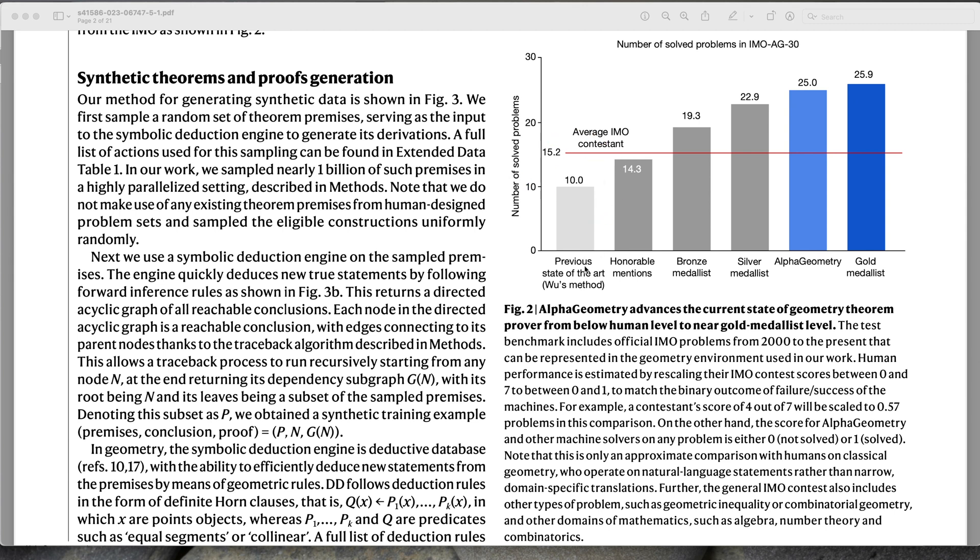So the previous state of the art, it is important to know that this is from 1978, solved 10 problems. The best participants, the gold medalists, so that's the top 10% of the participants of the math Olympiad, solved on average 25.9 problems, and AlphaGeometry is just shy of that between the silver and the gold medalists. It solved 25 problems.